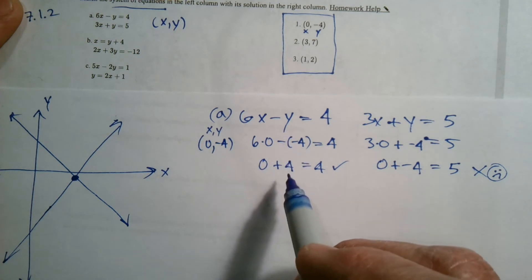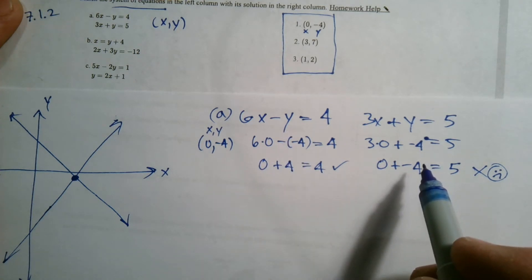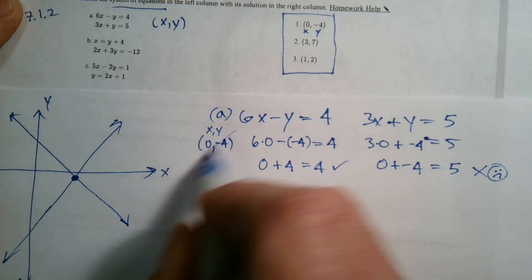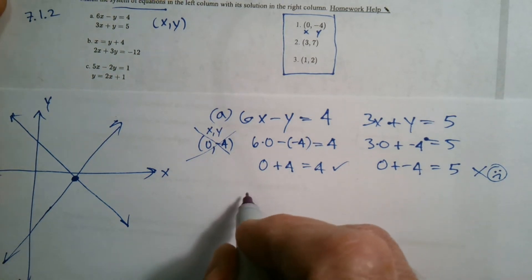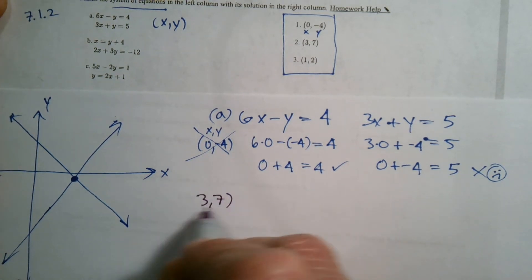So it worked for one, but it didn't work for the other. So it's not the solution. So I'm going to say that's not the solution. So now I'm going to try the next one. So the next one is 3 comma 7. So let's try that.